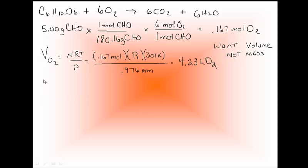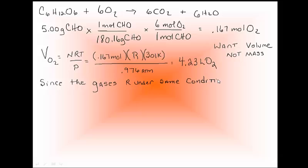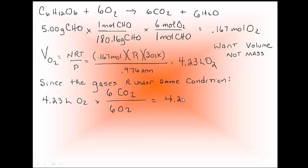Now the last half of the problem: since the gases are all under the same conditions, Avogadro's law takes over and you can just use the ratios to figure out the rest. If you're using 4.23 liters of oxygen gas, and oxygen to carbon dioxide is a one-to-one ratio, you are going to produce 4.23 liters of carbon dioxide and 4.23 liters of water. As long as all three gases are at the same conditions, you can use the mole-to-mole ratio for volume.